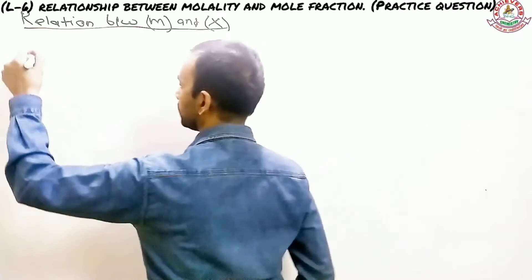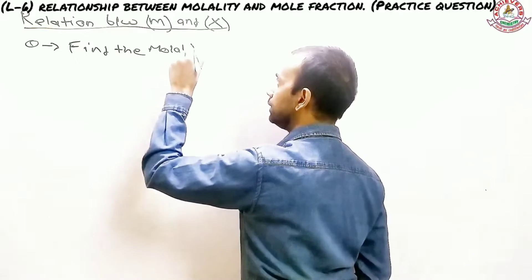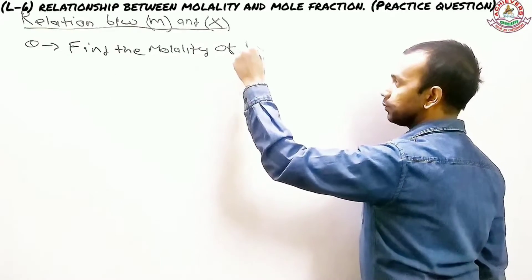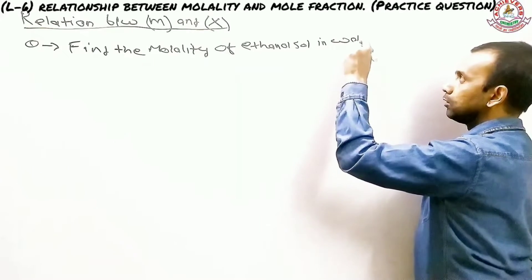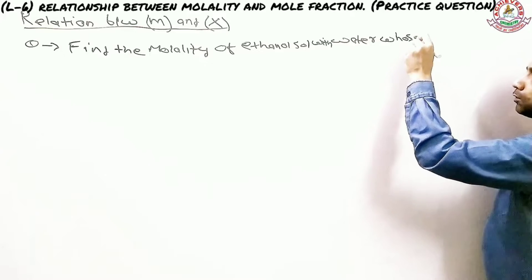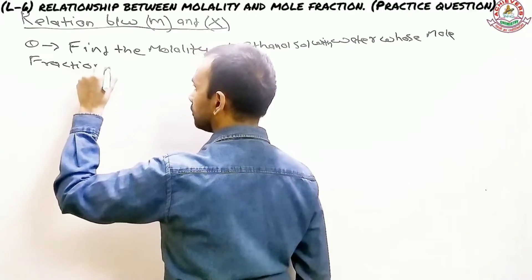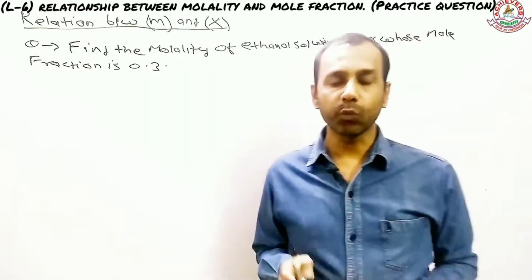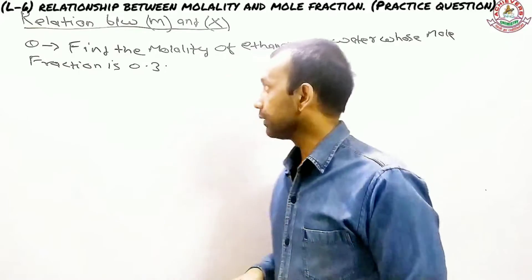We need to take a question to work through this. The question is: find the molality of an ethanol solution in water, whose mole fraction of ethanol is 0.3. You can change the value and try your own variation.